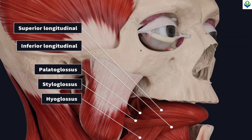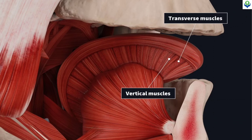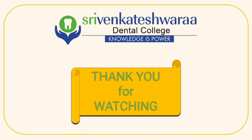Here is the picture showing the superior longitudinal muscle and the inferior longitudinal muscle. In this picture we get to see the transverse muscle and the vertical muscles. Thank you for watching.